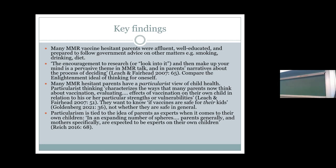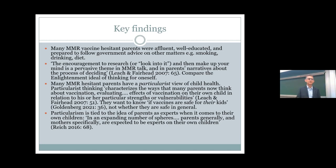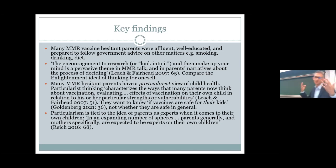One finding of this research is that many MMR vaccine-hesitant parents were affluent, well-educated, and prepared to follow government advice on other matters — on smoking, drinking, diet. So you cannot say the reason these people were vaccine-hesitant is that they were simply suspicious of what the government or doctors were telling them, because they were not in general. The Reich study found that most mothers in these scenarios were college-educated and from families with an income of $75,000 and above in the 1990s and 2000s.